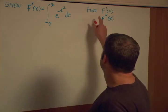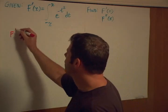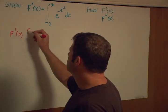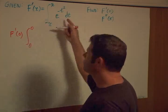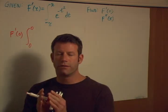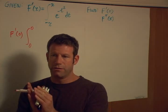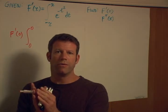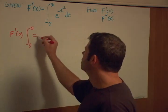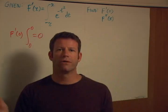Well, the first part, f prime of zero — we just have the integral from zero to zero of something. The integral from zero to zero, or any number to the same number, there's no interval there, there's no width. So obviously the area is zero, so this integral is zero.